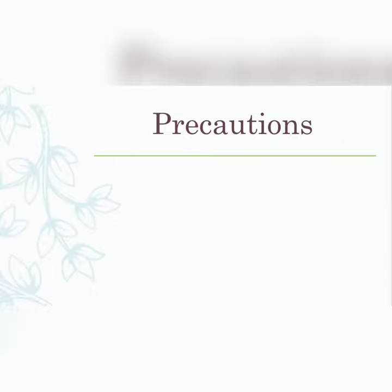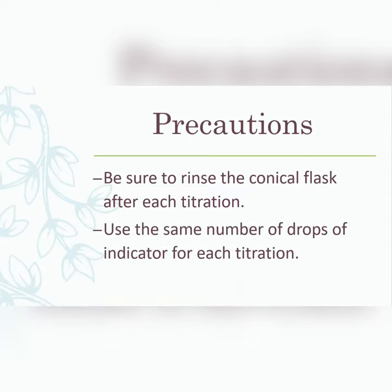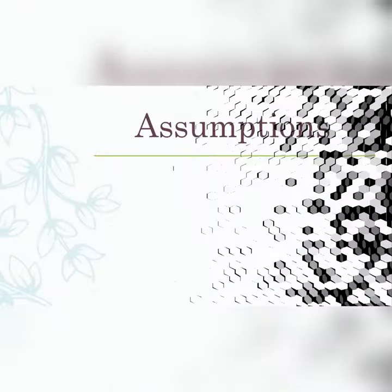Precautions: follow standard safety procedures such as wearing PPE. Rinse the conical flask between titrations so you don't carry residue from one to the next. Use the same number of drops of indicator for each titration — you can't use four drops one time and two the next, as that would be problematic. Read your burette and pipette at eye level to avoid parallax error. Remember, you generally only need one precaution.